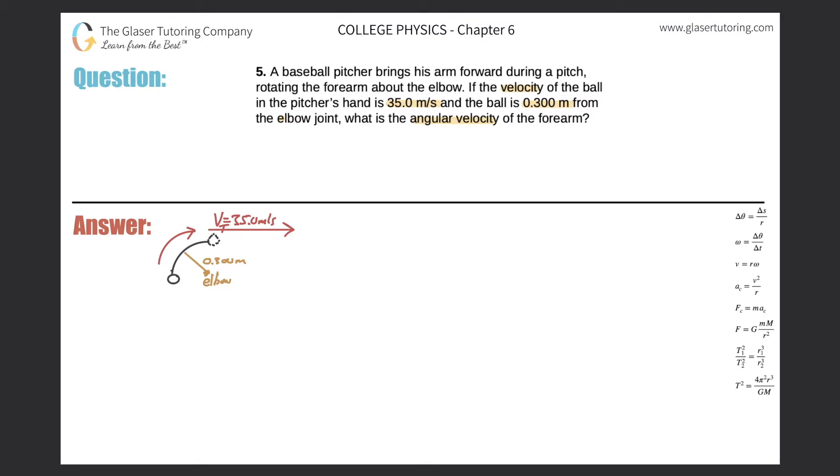They told us the length of the forearm, which if you look at the picture - if you could rotate your arm in a circle here - that distance they gave you is actually the radius. That's important.